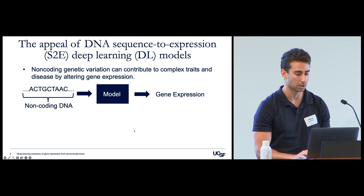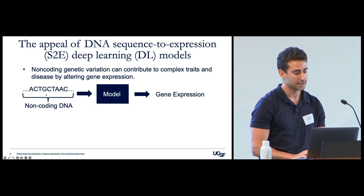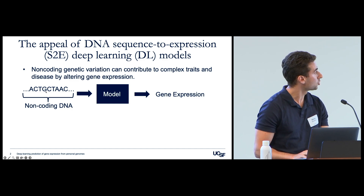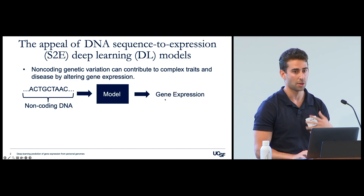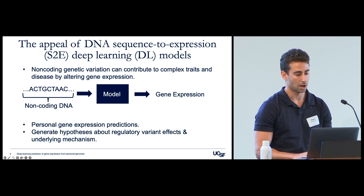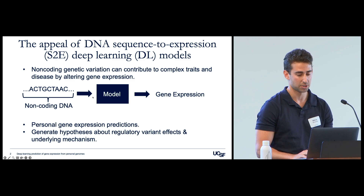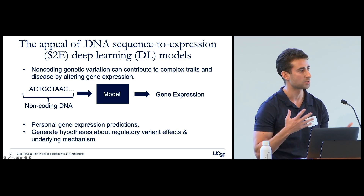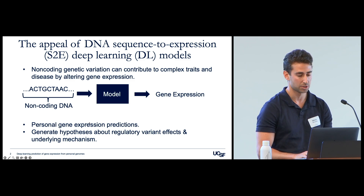One research direction that's been talked about a lot is to train models that take DNA sequence as input and try to predict gene expression. Since we know there is a relationship between sequence and expression, the hope is that if the model accurately learns that relationship, we can interrogate the model - for example, feed it someone's personal DNA sequences to predict their expression levels, or predict the effects of specific variants and generate hypotheses about their mechanisms.